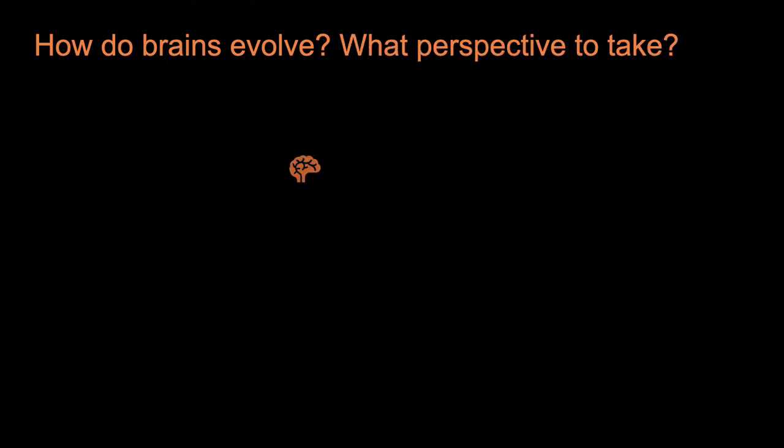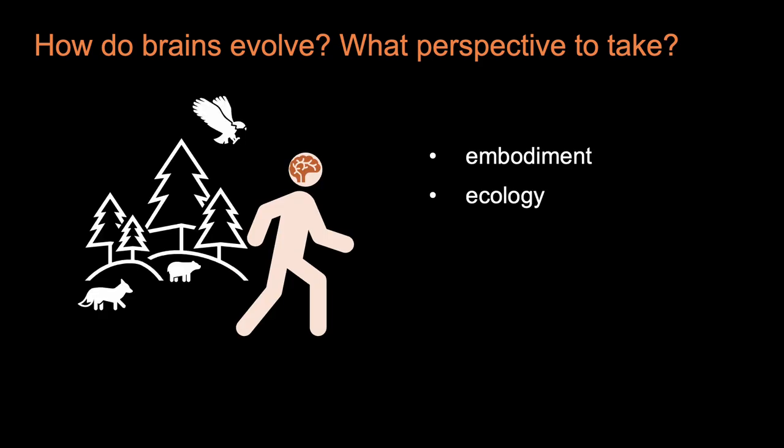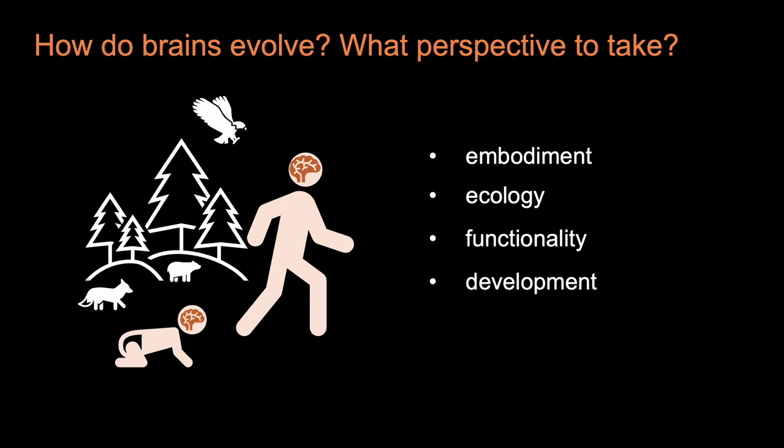Brains of course do not occur in isolation — they're part of a bodily system which exists in an environment rich in opportunity and threat, and this ecological context will shape the demands on how the brain functions, as will the developmental processes that lead to the formation of a mature organ. We can approach brain evolution from all of these viewpoints encompassing embodiment, ecology, functionality, and development, but a critical question is how these processes interact within an evolutionary framework.